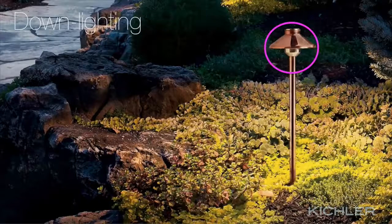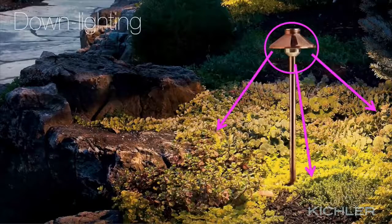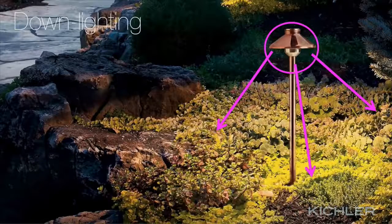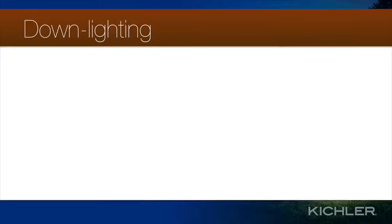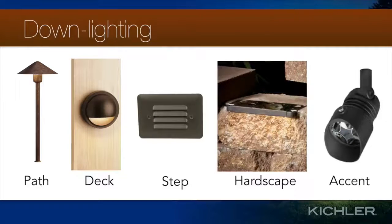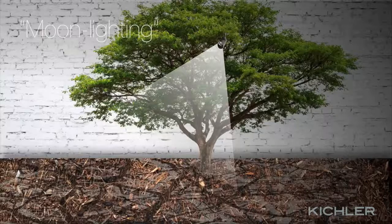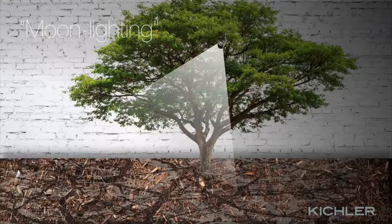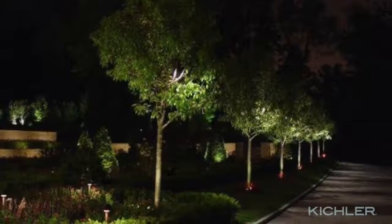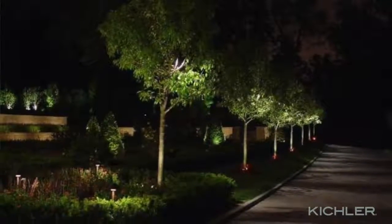Down lighting refers to situations where the light source is located above the object and shines down toward the ground. In some locations, up lighting is not allowed by local regulations, so down lighting is the only option. Fixtures for down lighting include path, deck, step, and hardscape lights, and accent lights can be directed down when mounted in trees, on walls, under soffits, on pergolas, or on other architectural elements. One of the most common down lighting approaches is moonlight effects, where one or more fixtures mounted high in a tree cast interesting shadows on the ground, creating soft natural light that efficiently illuminates a large area.